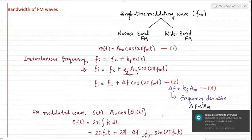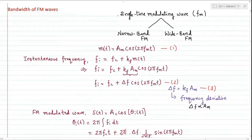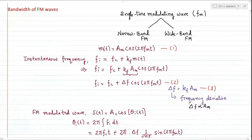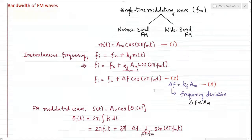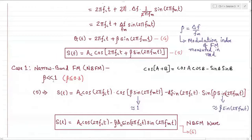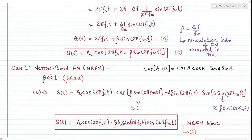In the last session, we were discussing the bandwidth of FM waves. I took the case with a single tone modulating wave, where m is represented with a single frequency signal. We went on to deviate in two perspectives: one with narrow band and another with wide band. In narrow band, beta — the modulation index of FM measured in radians — was considered very small, specifically beta less than or equal to 0.3.